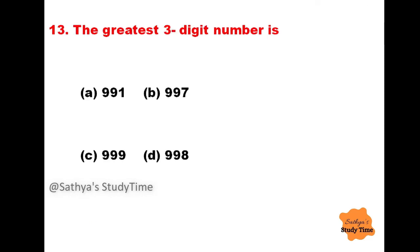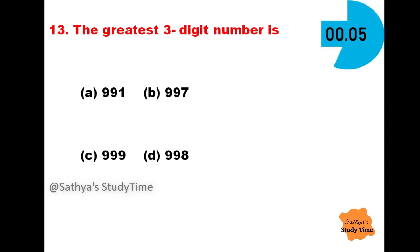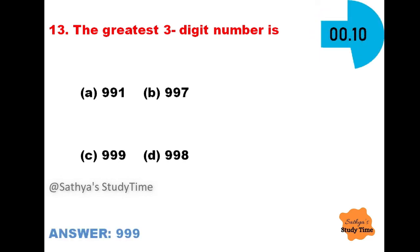Question 13: The greatest three-digit number is. Your time starts now. The answer is 999.